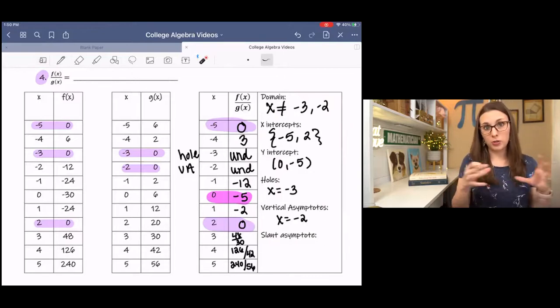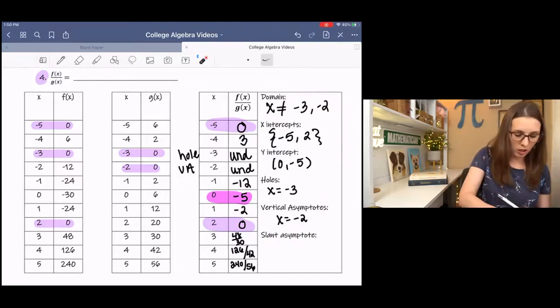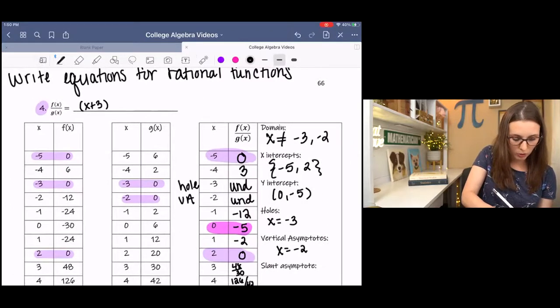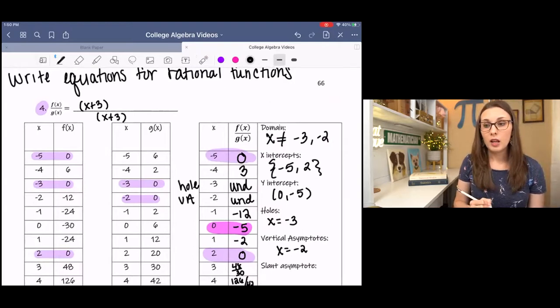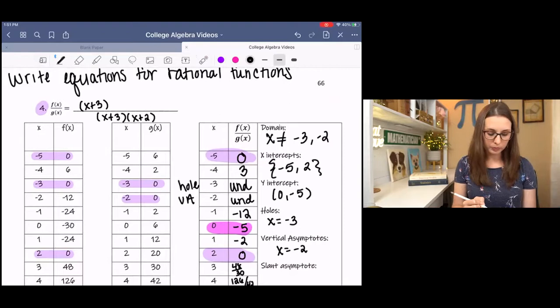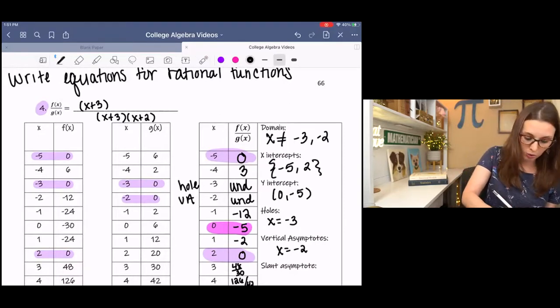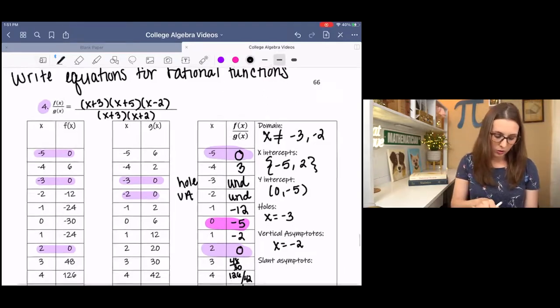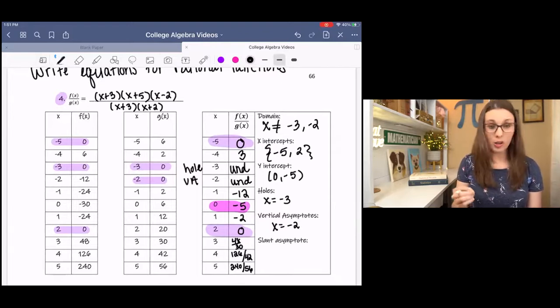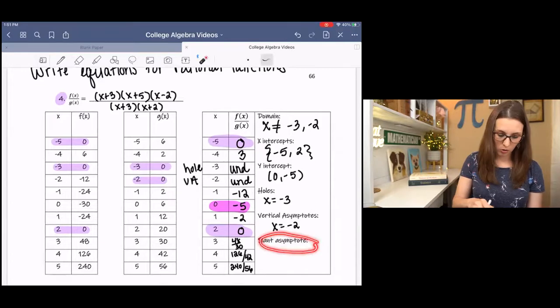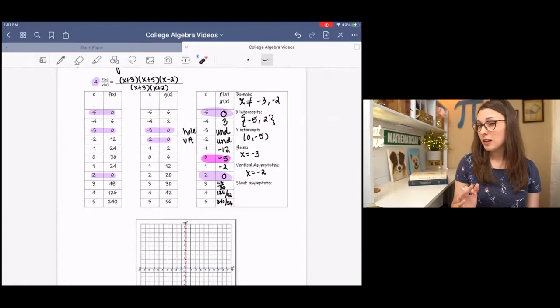So from this information, I can also write the equation of my rational function. I already showed you it with just looking at the two separate tables, but if I were to just be given this last one, I could still write the function. If there's a hole at x equals negative 3, then that means there is x plus 3 in the numerator and the denominator. If there's a vertical asymptote at x equals negative 2, then that means that there's an x plus 2 in the denominator. Then I have x-intercepts that goes in the numerator at x equals negative 5 and x equals 2. So for the time being, I think that's our equation in factored form. Now we could multiply that all out to figure out standard form, which would be beneficial because it's going to help us find the slant asymptote. But for now, we can graph it and maybe estimate it. We'll see once we graph it.